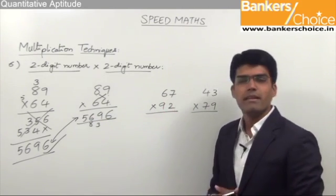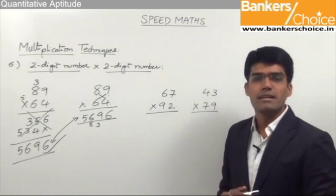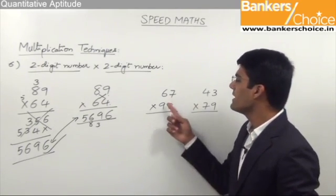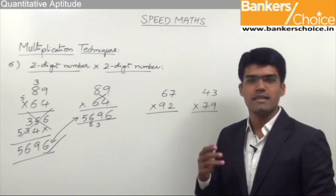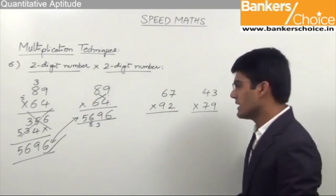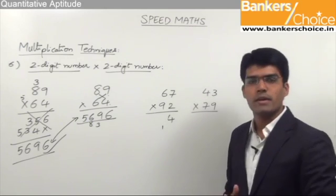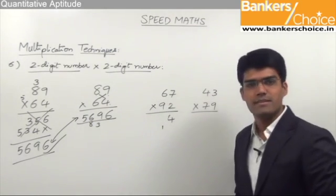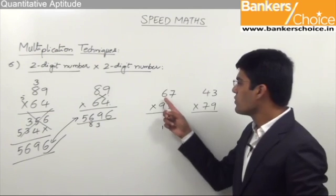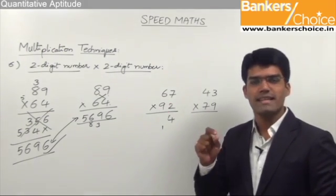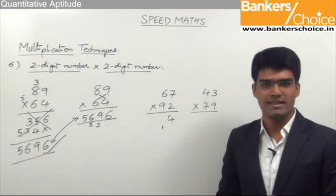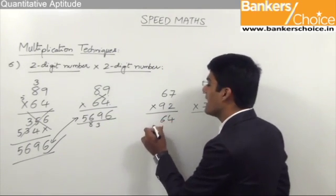One more example is 67 into 92. Again, split and merge will be a little difficult in such cases and no other special condition is applicable. So let us see how to get the answer using this three-step procedure. The first step is to multiply both the unit spaces — that is 7 into 2, which is 14. So write 4 in the answer and 1 is carried forward. Second step is cross multiplication of units and 10 spaces: 6 into 2 is 12, and 9 into 7 is 63. 12 plus 63 is 75. 75 plus 1 (carry) is 76. So we take 6 in the answer and 7 gets carried forward.